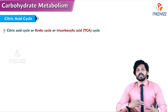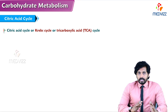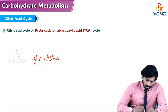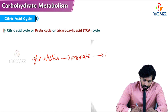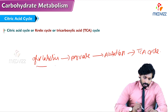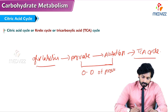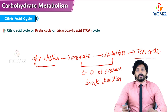TCA cycle is nothing but a continuation of oxidation of glucose. Some part of the glucose will be oxidized in glycolysis, forming pyruvate, which then forms acetyl-CoA and enters the TCA cycle. Glycolysis and TCA cycle are linked by the oxidative decarboxylation of pyruvate, called the link reaction between glycolysis and TCA cycle.